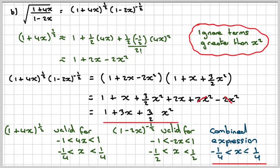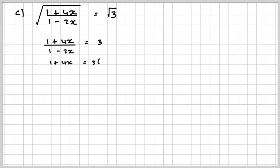Right, we need to put a value of x in here, so we make this now the square root of 3. So that means I need to solve (1 + 4x)/(1 - 2x) equals 3. So you get 1 plus 4x is equal to 3 times (1 - 2x).